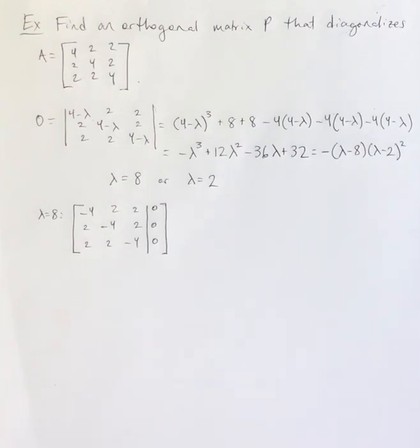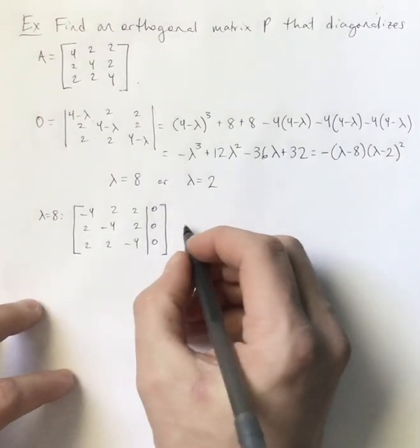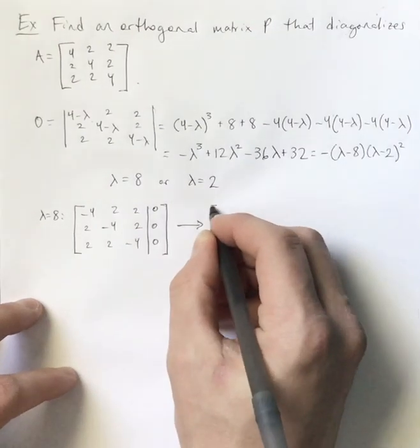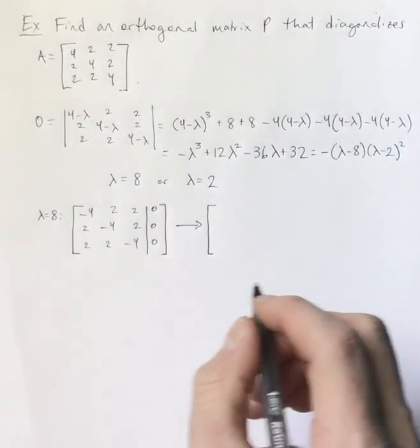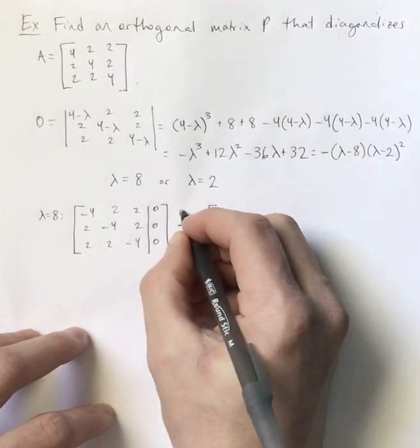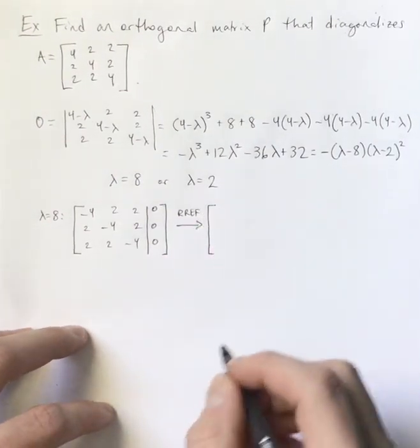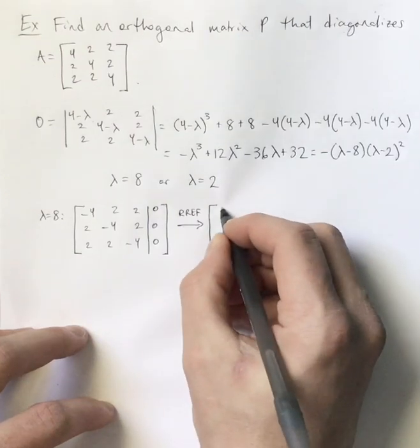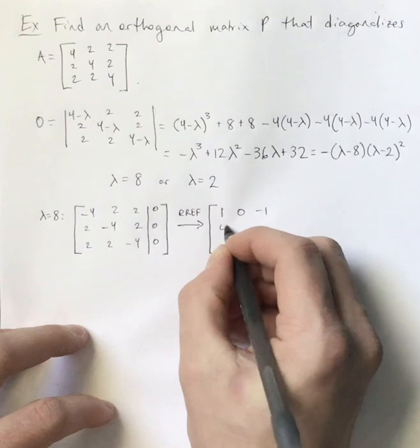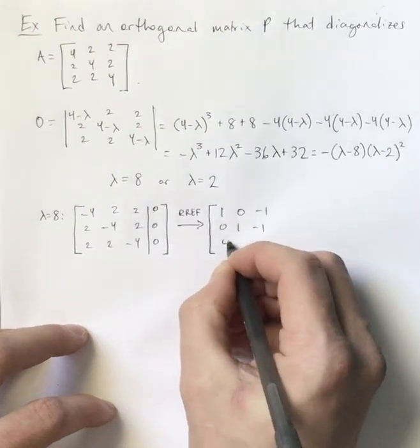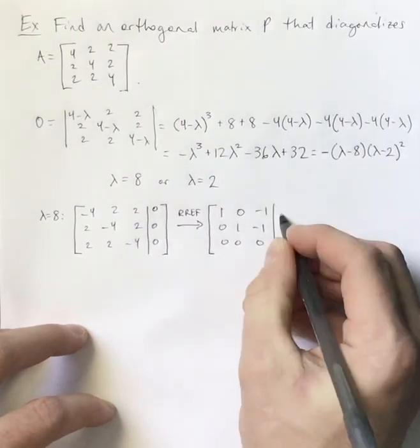So you can look in the notes to see the specific row operations that I end up using here. But I will jump to the end. In the interest of time, this is a fairly involved problem. So I'm just going to tell you what the RREF for this ends up being. So you will get this matrix right here.